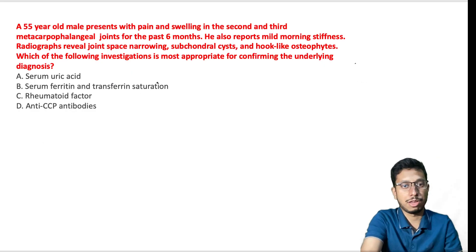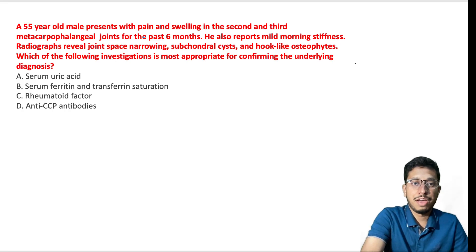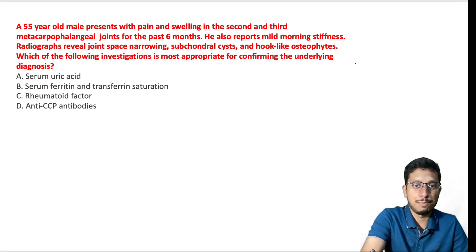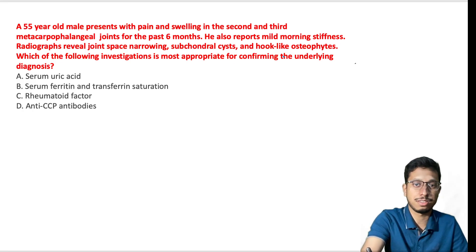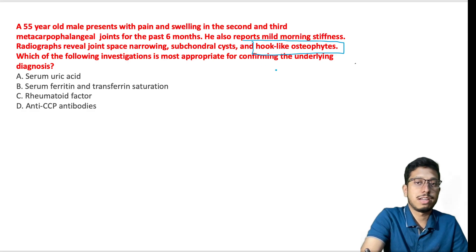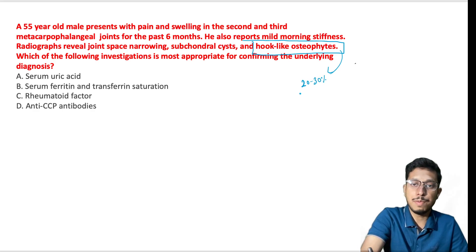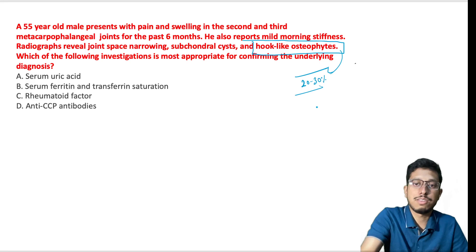A 55-year-old male presents with pain and swelling in the second and third MCP joints for the past six months. He also reports mild morning stiffness. Radiograph reveals joint space narrowing, subchondral cysts, and hook-like osteophytes. This hook-like osteophyte is a very common description in hemochromatosis-related osteoarthritis, seen in about 20 to 30 percent of cases, but it is not pathognomonic — not sensitive or specific, though commonly seen.